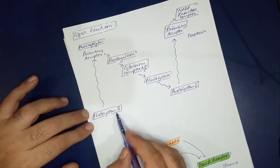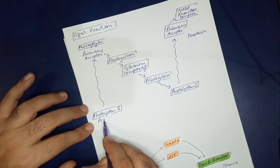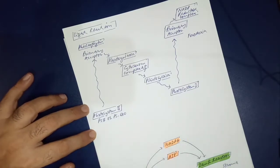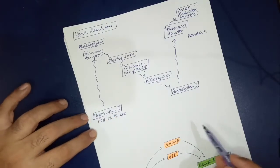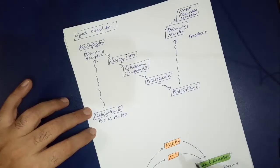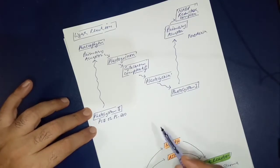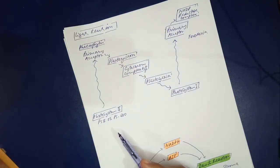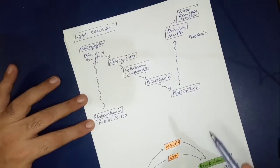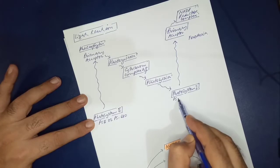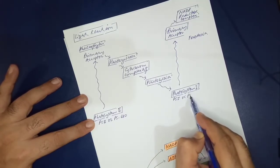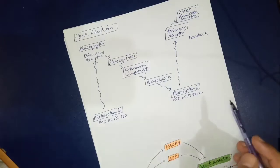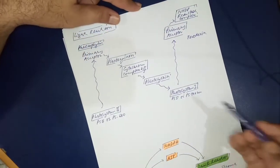Photosystem 2 is also called PS2 or PS680. Why PS680? Because it absorbs light at 680 nanometers. Photosystem 1 is called PS1 or PS700 because it can absorb light at 700 nanometers.